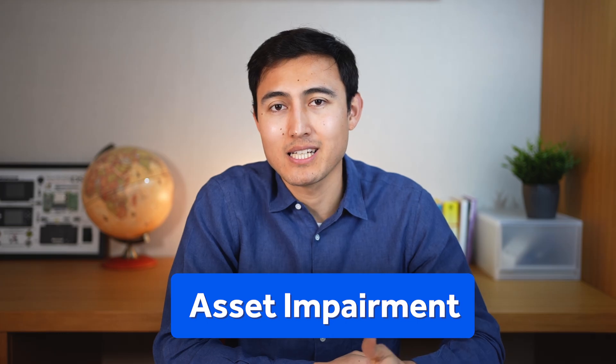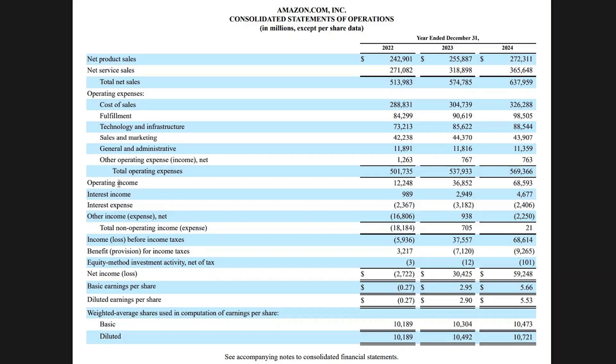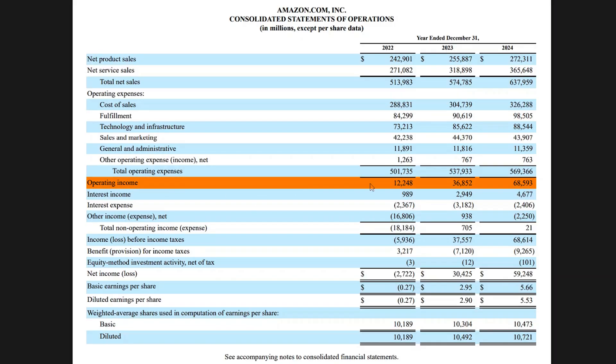In case you don't know what an asset impairment is, it's basically the reduction of an asset's value. For example, Amazon could overpay for a specific company, and if that company underperforms, they write it down as an asset impairment. All of this then takes us to the operating income, so let's look at some ratios associated with it.